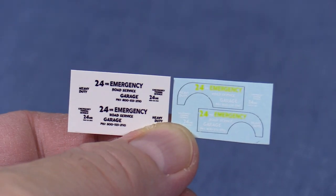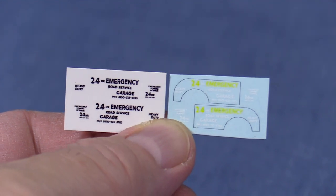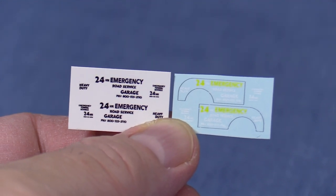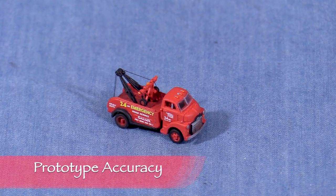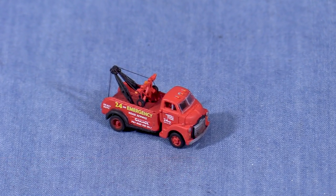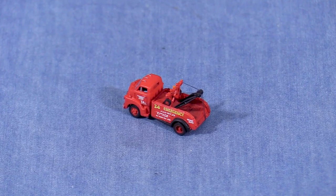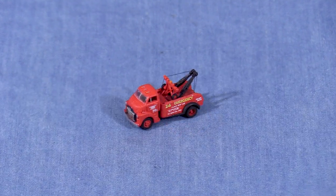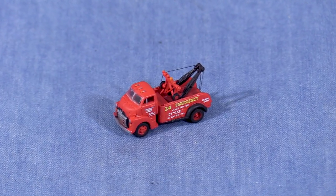The decal bag includes two sets of water slide decals, one with black lettering and one with light lettering. You can use either one depending on the color you decide to paint the truck. I don't know if this kit follows a specific prototype, at least as far as the decals go, but I was able to find several photos online of tow trucks that look very much like the model. This would be a good kit for any 1950s era layout or as an older tow truck in a later time period.